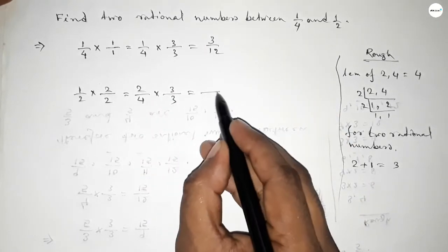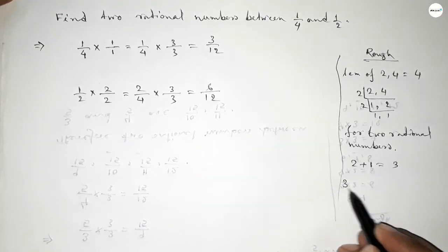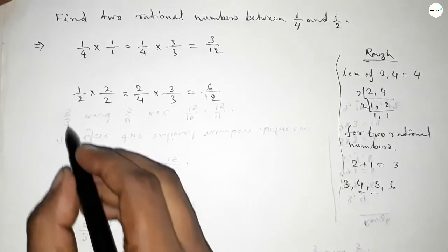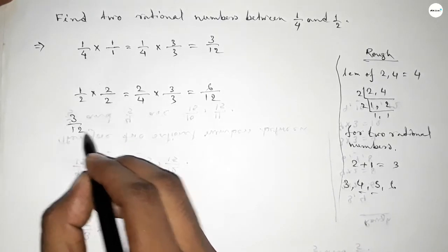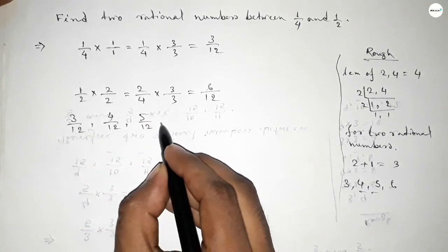Now this is 3/12 and this is 6/12. Between 3 and 6 we can find two natural numbers, and by these natural numbers we can form two rational numbers. Here all the rational numbers are 3/12, 4/12, 5/12, and 6/12.